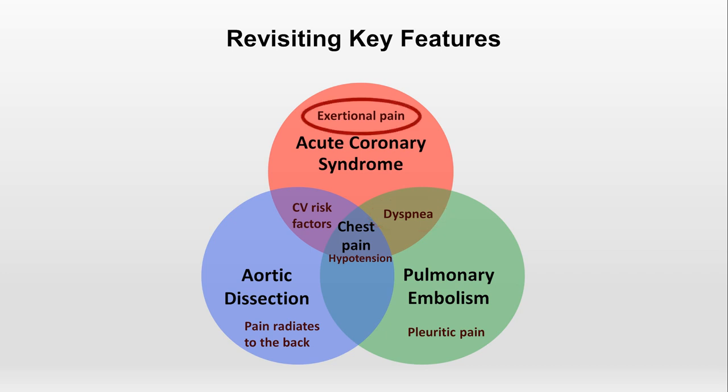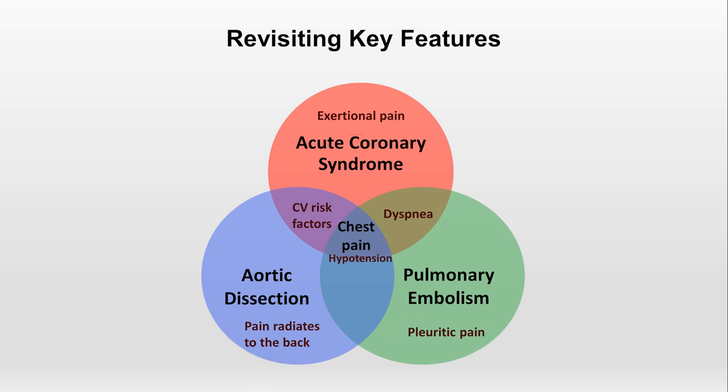But chest pain that's exertional is predominantly a feature of ACS. Chest pain that radiates to the back is particularly suggestive of a dissection among these three possibilities. And chest pain that's pleuritic — meaning worsens with deep inspiration — is characteristic of a PE. While none of these last three findings are truly pathognomonic, meaning a finding that's only seen in a single condition, they do strongly support one particular condition under consideration. In summary, illness scripts are most helpful when they contain maximally distinguishing key features, rather than just those shared by diseases with similar presentations.